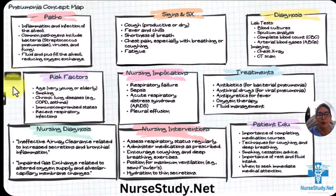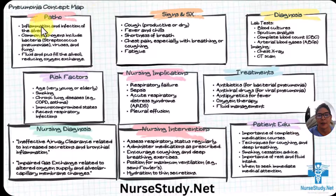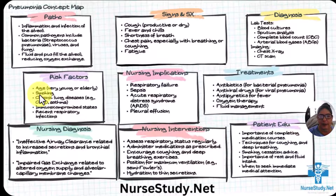Those at risk include age — so the very young or elderly — those who smoke especially, chronic lung diseases like asthma and COPD, immunocompromised status, and recent respiratory infections where they haven't had full recovery before catching another bug.